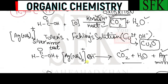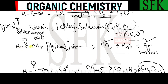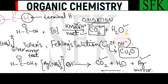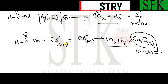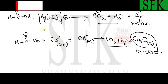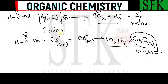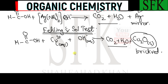Methanoic acid reacts with Tollens' reagent to give carbon dioxide and water, since it is an oxidation reaction. Similarly, Fehling's solution test also gives a brick-red precipitate with methanoic acid, as it too is an oxidation — or redox — reaction in which methanoic acid is oxidized to carbon dioxide and water.